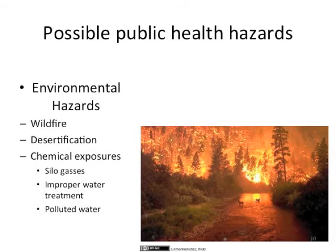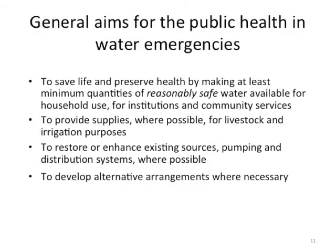There are also a number of environmental hazards that may result from drought and desertification. The general aims for the public health response in water emergencies are to save life and preserve health by making at least the minimum quantities of reasonably safe water available for household use, for institutions, and for community services, to provide supplies where possible for livestock and irrigation purposes, to restore or enhance existing sources, pumping and distribution systems where possible, and to develop alternative arrangements where necessary.